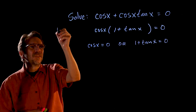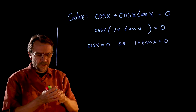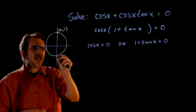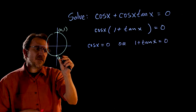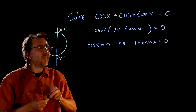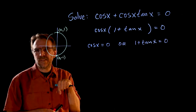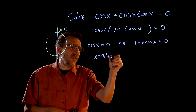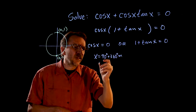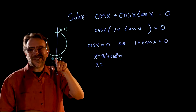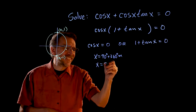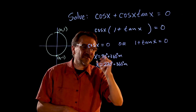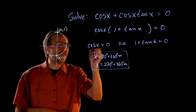Now on the unit circle, we know cosine is 0 on one of the axes. So here we have 0, 1, and here we have 0, negative 1. So cosine is 0 — cosine is an x value — so cosine is 0 at 90 degrees plus any multiple of 360, and then cosine is going to be 0 at 270 degrees plus 360n. So there are two solutions for that term.